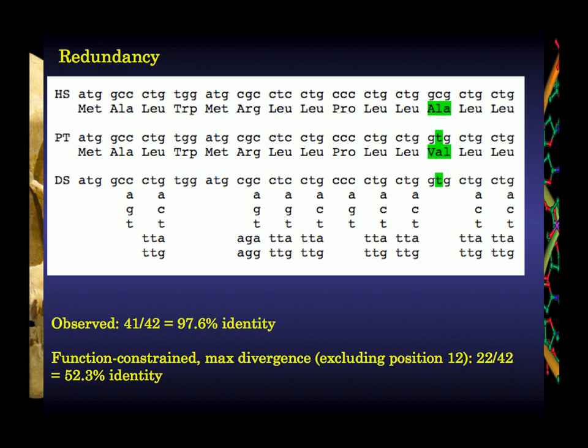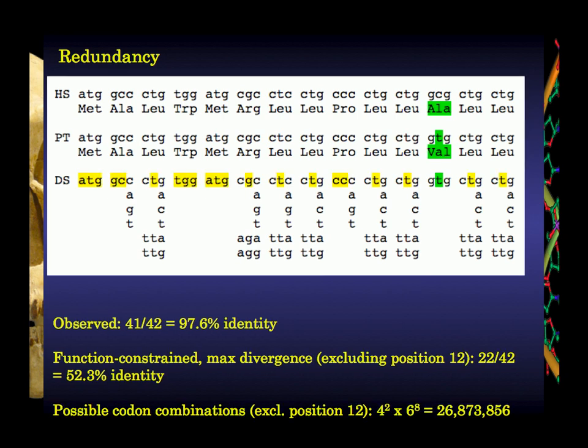We can constrain function, but the genetic code, because of its redundancy, has different coding options available. Some codons you have to have if you want those amino acids, but everything else is up for grabs. So how many different possible ways can you code this little snippet of insulin? There are about 26 million different possible ways to code this little snippet of insulin, yet the one that we see is the most consistent with common ancestry of those different options that are available.